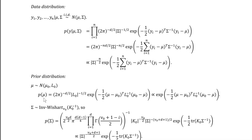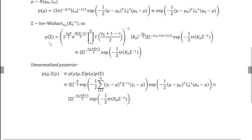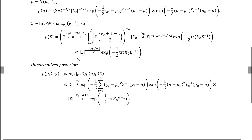The prior density for mu is the multivariate normal density with the appropriate parameters. We once again use the proportional-to symbol to drop any terms that don't involve mu or sigma. Lastly, the prior density for sigma can be written as the following complicated expression. Once again, we do not care about any terms that do not involve mu or sigma, so we use the proportional-to symbol to get rid of any terms that will not be relevant in subsequent analysis.